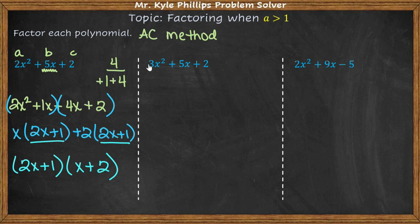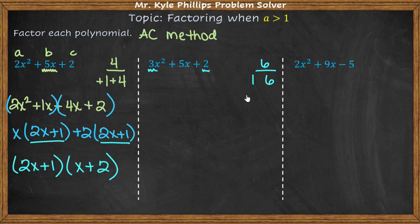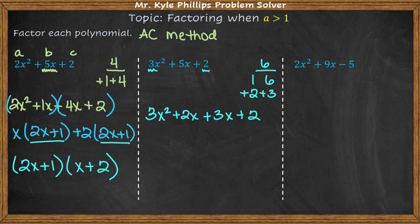Let's do another one. 3 times 2 gives me 6. I need multiples of 6 that I can add together — because the signs are the same, both have to be positive or both negative, so you add those numbers together and need to get 5. Can I add 1 and 6 to get 5? No. Can I add 2 and 3 to get 5? Yes. So both values are positive, and I write out: 3x² plus 2x plus 3x plus 2.